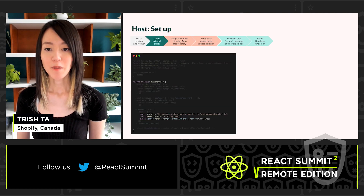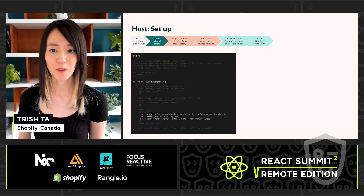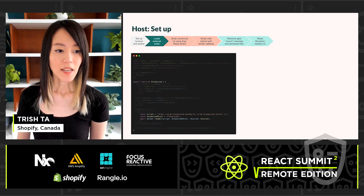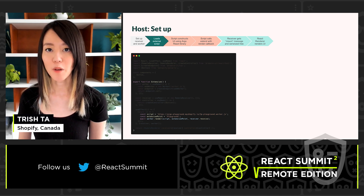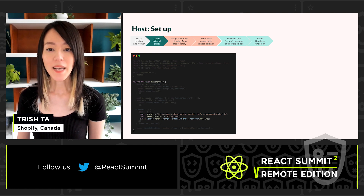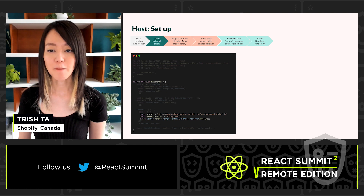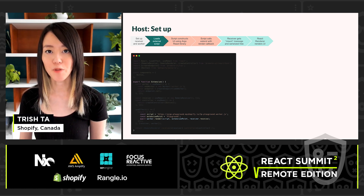Finally, once the render function is set up inside the worker, the host just needs to call render with the external script and the extension point. The extension point is set to a string 'playground', which is just a representation of a point available on the host which external scripts can execute custom behavior on. We are also passing through the receiver's receive method that will serve as the handler for messages coming in from the remote root.